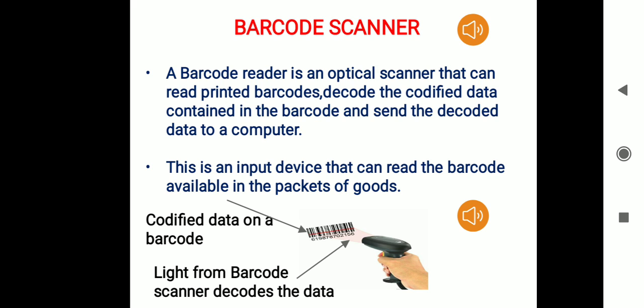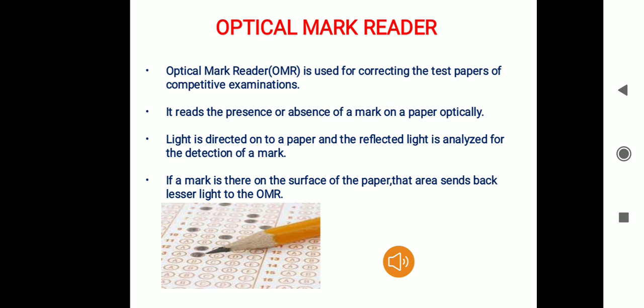Another point to note is that the terms barcode reader and barcode scanner are synonymous — they are the same. The next input device in the list is the Optical Mark Reader (OMR). The optical mark reader is used for correcting test papers of competitive examinations. Check the OMR answer sheet at the end of the slide — for every question there are some options in the OMR answer sheet.